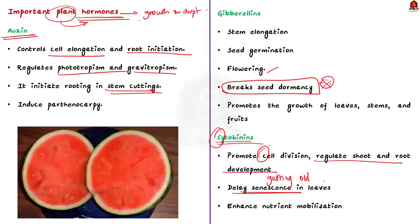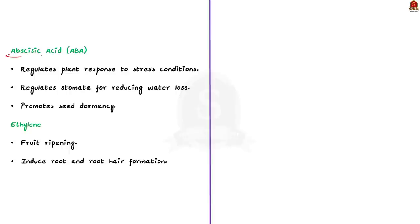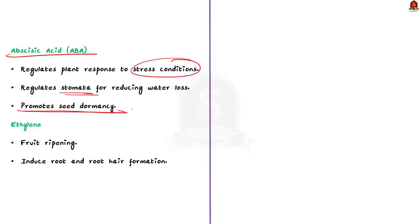The fourth hormone is abscisic acid. Abscisic acid helps plants deal with tough conditions like drought, cold, and salt. It helps plants save water by closing tiny openings called stomata. Abscisic acid also helps seeds stay dormant until the time is right for them to sprout. Finally, we have ethylene. Ethylene is all about fruits — it helps fruits to ripen and makes roots and root hairs grow to take in more water and nutrients.